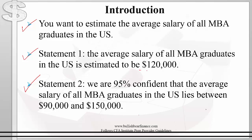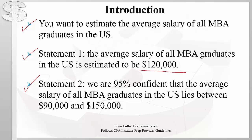Statement 1 just gives you a point estimate, but most likely the actual average salary is not exactly this amount, and statement 1 gives you no idea of this uncertainty — it does not tell you that the actual amount is most likely not this number. Statement 2, on the other hand, tells us right away that we don't know for sure what the average salary is; we just have a range, but it tells us how much confidence we have in that range, which is 95%. You will also notice that the point estimate of $120,000 falls within this range. It turns out that statement 2 is actually a 95% confidence interval.